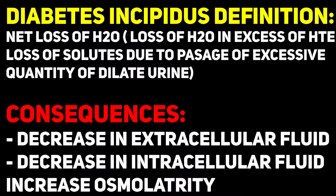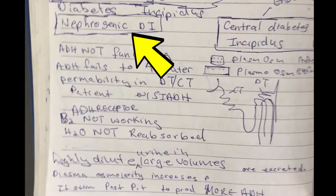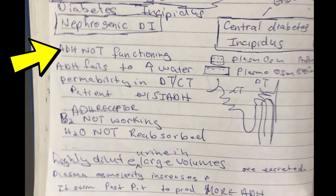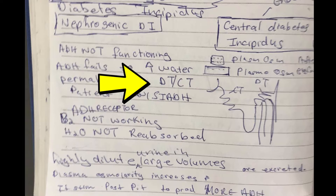Now let's move on to the hormonal part. There is nephrogenic diabetes insipidus, which we're discussing today, and central diabetes insipidus which is more endocrinology and will be discussed later. In nephrogenic DI, ADH is still being produced by the pituitary gland — it's just that the receptors in the distal convoluted tubule and collecting tubules, known as V2 receptors, are not working.